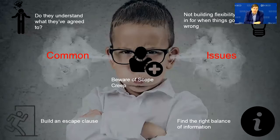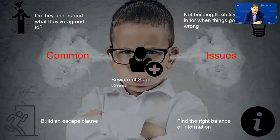Finally, beware of scope creep. This can work multiple ways: the project accumulates additions until it becomes unrecognizable, or conversely, the one part that makes the project meaningful gets cut out, and what remains no longer really identifies as an innovative project. This isn't always something you can control, but be aware of it, identify the critical dependencies within the proposal that might make or break the project, and try to make decision makers aware of them.